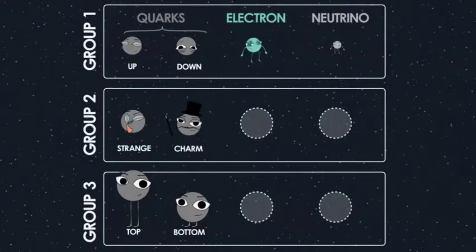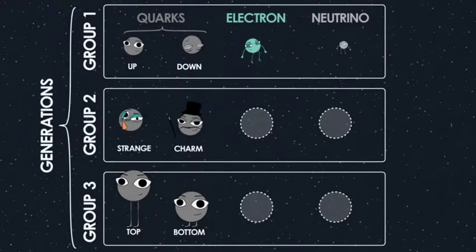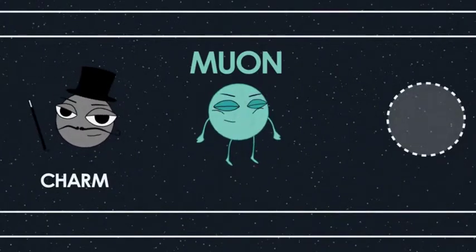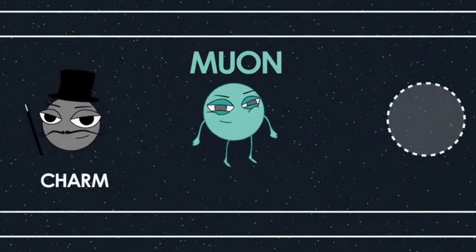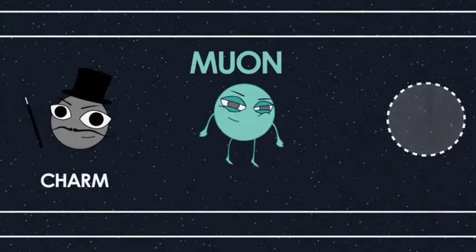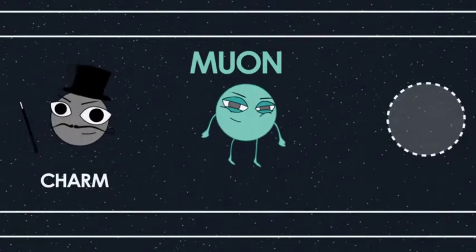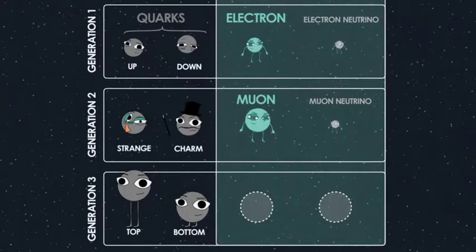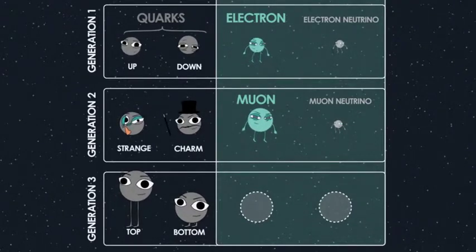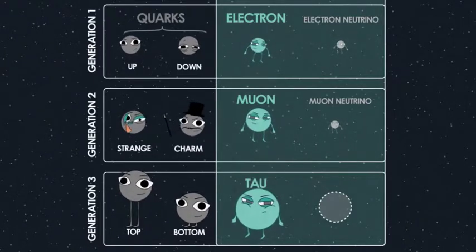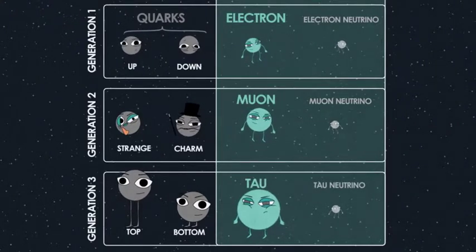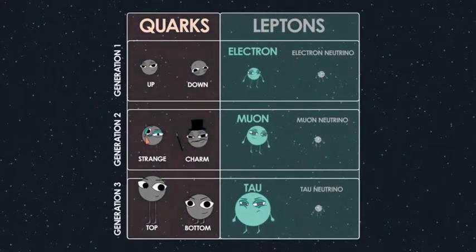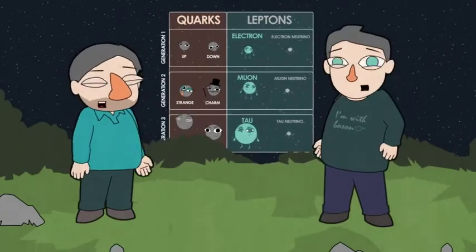These three pairs of quarks are called generations, for no particular reason. There's also the muon, which is like a heavier version of an electron — when it first showed up in a particle accelerator, a physicist said 'who ordered that?' There's also an associated neutrino. So there's the electron and electron neutrino, the muon and muon neutrino, and then the tau — an even heavier, even shorter-lived electron — and the tau neutrino. These six non-quark particles are called leptons.